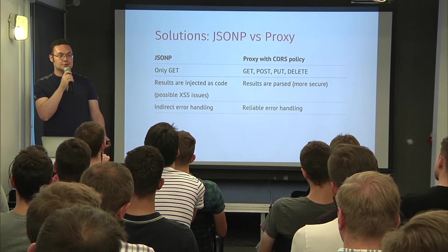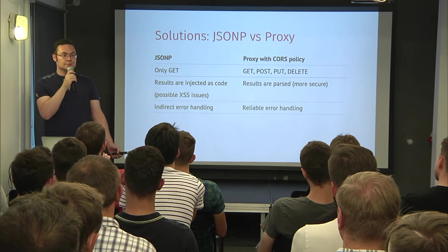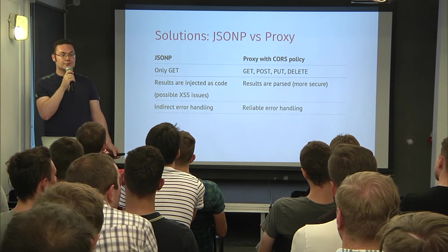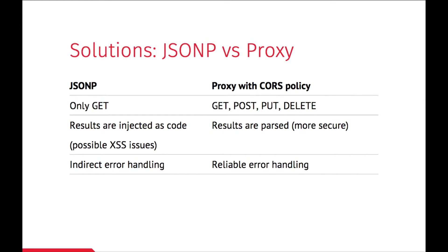With JSONP we insert the response into our DOM and it gets executed and provides us the result. But this way we have no control if something goes wrong — we have no control over errors. We don't know when it happens, so our code can react only when the result is received.